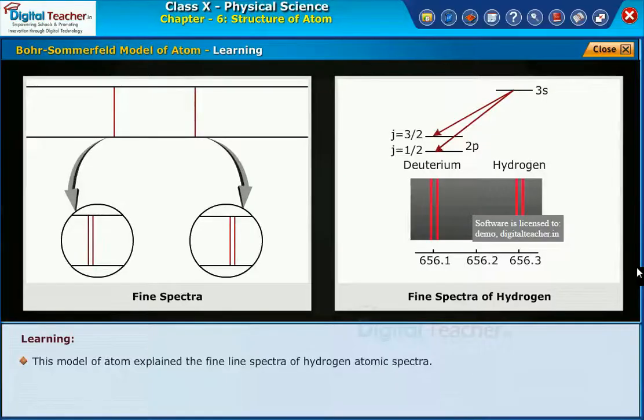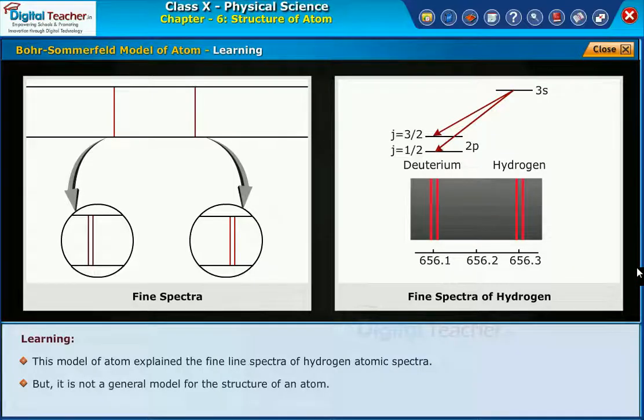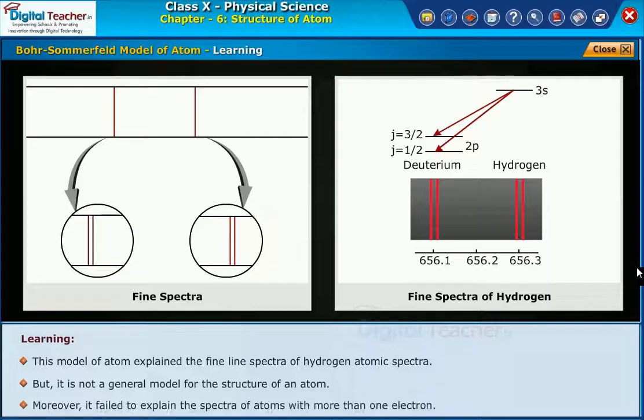This model of atom explained the fine line spectra of hydrogen atomic spectra, but it is not a general model for the structure of an atom. Moreover, it failed to explain the spectra of atoms with more than one electron.